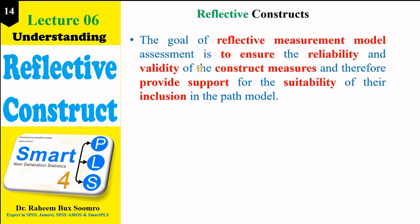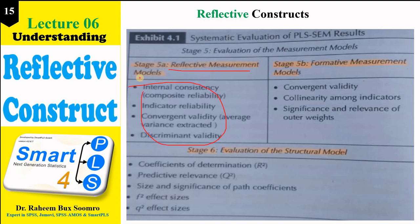The goal of reflective construct assessment is to ensure the reliability and validity of the construct measurement and therefore provide support for the suitability of its inclusion in the model. When all constructs fulfill the criteria of reliability and validity, you can include that construct in your model. There are five stages for reflective measurement model assessment: we check internal consistency through composite reliability and Cronbach's alpha, indicator reliability, convergent validity, and discriminant validity.